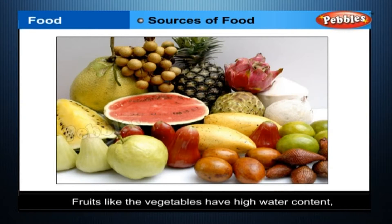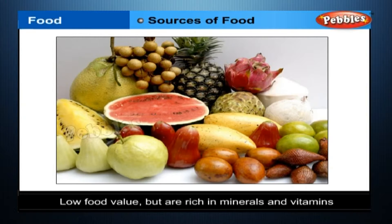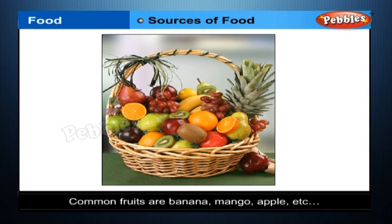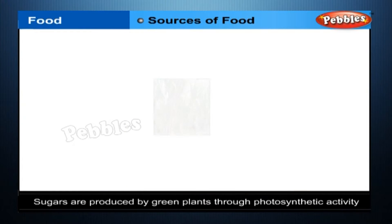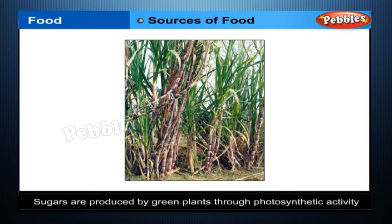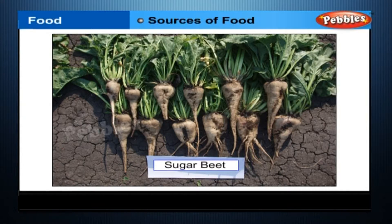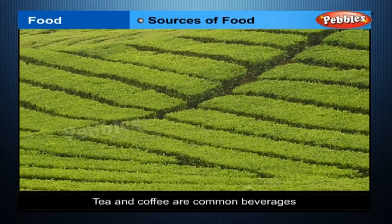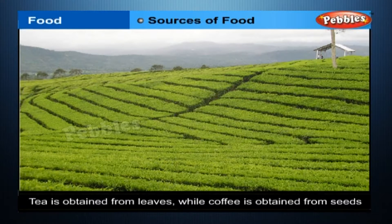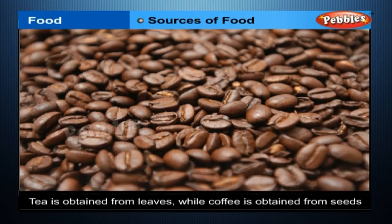Fruits, like vegetables, have high water content, low food value, but are rich in minerals and vitamins. In common usage, the term fruit is used for those which are usually taken without cooking. Common fruits are banana, mango, apple, grapes, pineapple, guava, orange, lychee, and so on. Sugars are produced by green plants through photosynthetic activity. Chief sugar-producing plants are sugarcane and sugar beet. In sugarcane, the plant part used is the stem, while in sugar beet it is the root. Tea and coffee are common beverages — tea is obtained from leaves while coffee is obtained from seeds.